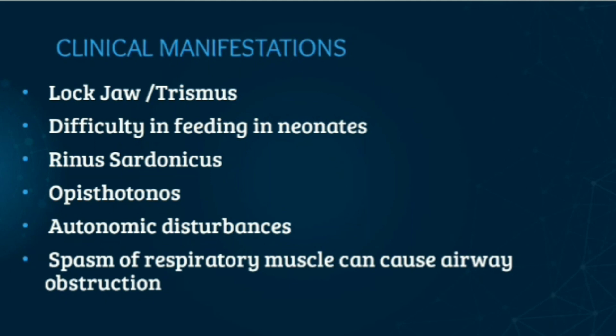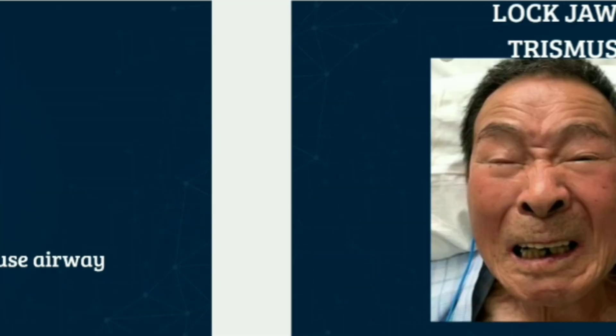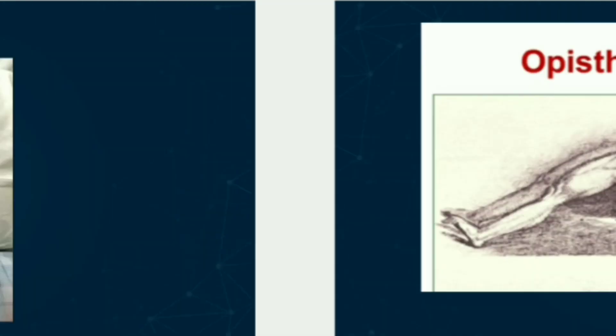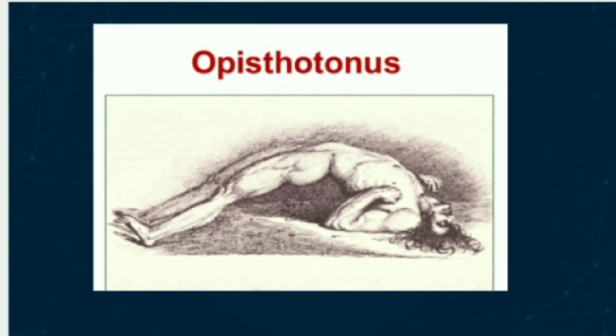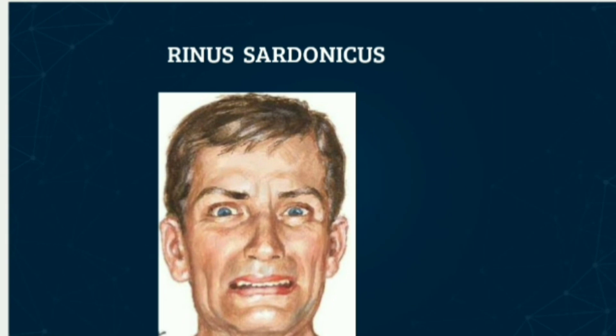When we come to complications, first is risus sardonicus — uncontrolled muscle contraction in the muscles of facial expression. Second is opisthotonus, which happens when there is uncontrolled muscle contraction in the back muscles; due to the generalised spastic contraction of the extensor muscles, the affected person shows abnormal postures of the body. Third is spasm of the respiratory muscles, which can cause airway obstruction. In the diagrams you can see the lockjaw or trismus, opisthotonus, and risus sardonicus.